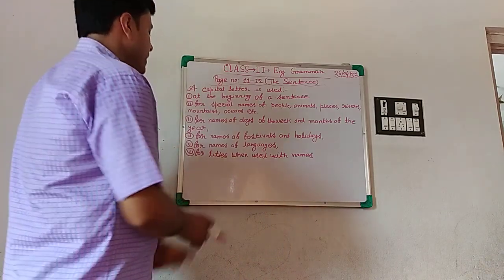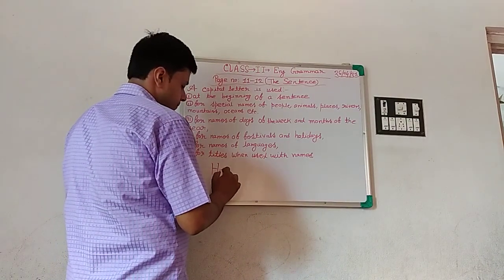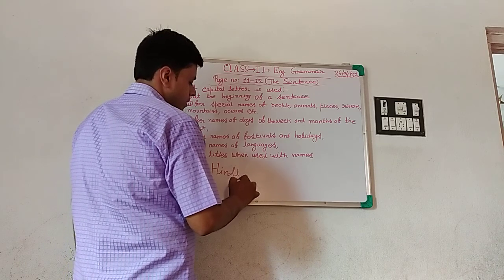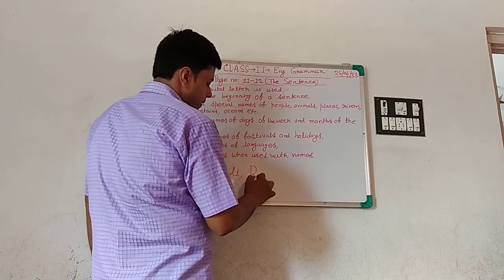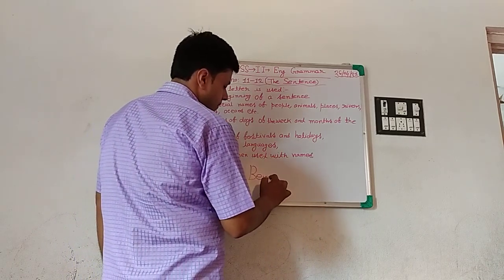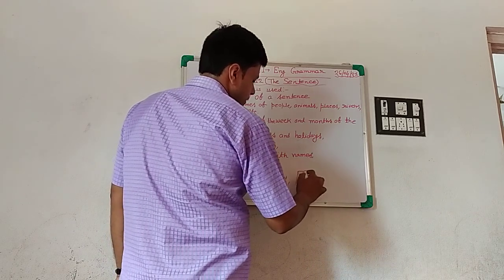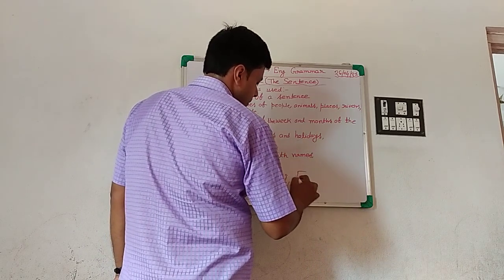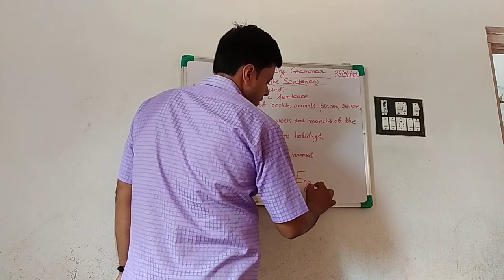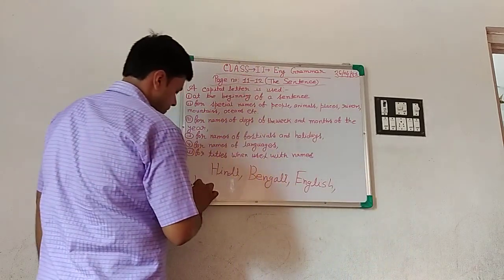The fifth rule: capital letters are used for the names of languages. For example, Hindi, Bengali, English, Marathi — you always use a capital letter when you write the names of languages.